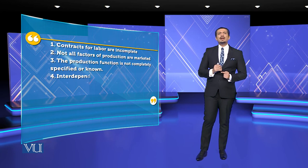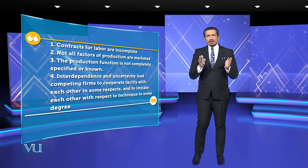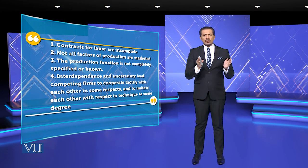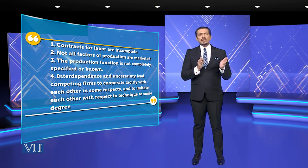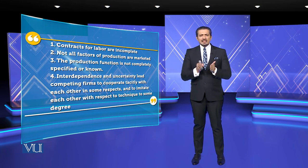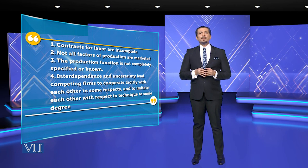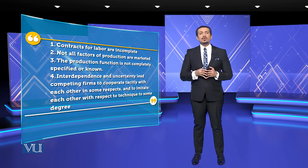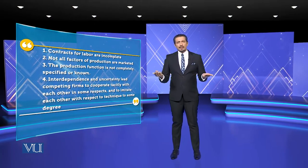One is that contracts for labor are incomplete. The contractual labor is not complete. Then the factor of production is not marketed. The third thing is that you have uncertainty, which is the unknown and unseen market — the unknown market has no idea.